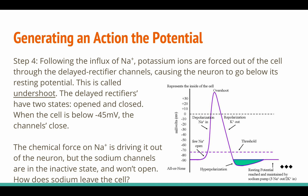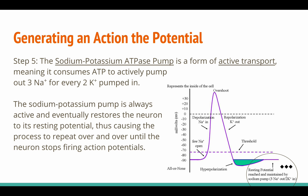Following the influx of sodium ions, potassium ions are forced out of the cell through the delayed rectifier channels, causing the neuron to go below its resting potential — this is called undershoot. Unlike voltage-gated sodium ion channels, the delayed rectifiers have only two states: open and closed. When the cell is below negative 45 millivolts, the channels close. Sodium leaves the cell through the sodium-potassium ATPase pump, a form of active transport that consumes ATP to pump out three sodium ions for every two potassium ions pumped in. This pump is always active and eventually restores the neuron to its original resting potential, causing the process to repeat until the neuron stops firing action potentials.